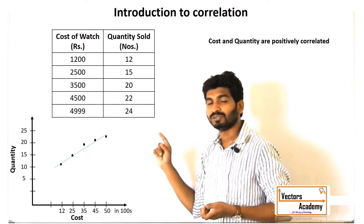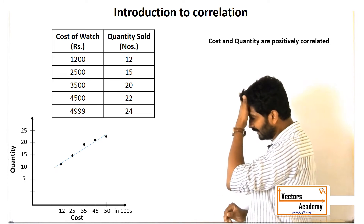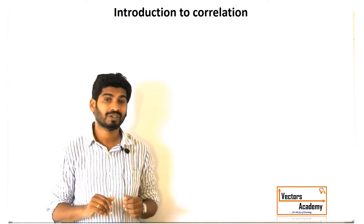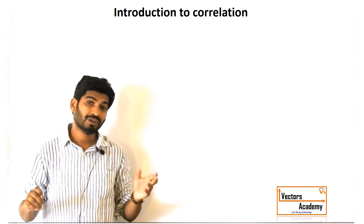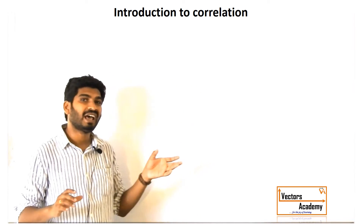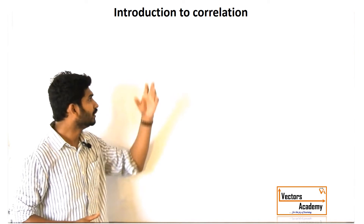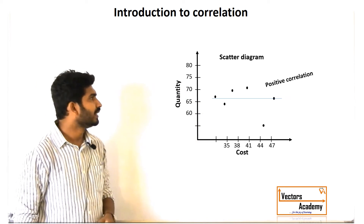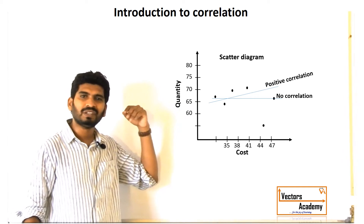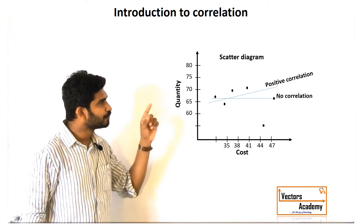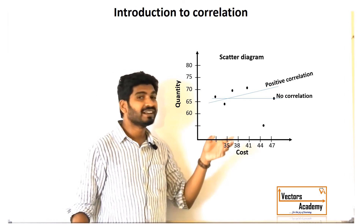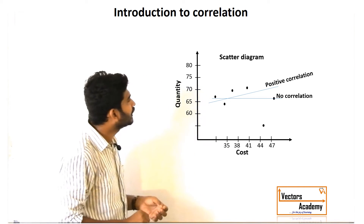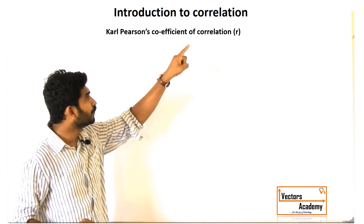Earlier, statisticians used to use the scatter diagram to explain the correlation between variables. But later, statisticians had different opinions about the scatter diagram. Some said the graph is increasing, whereas some said there is no proper correlation between the two variables. This problem arises because the scatter diagram does not actually give you a mathematical value for the relationship between two variables.